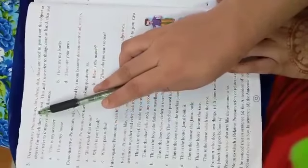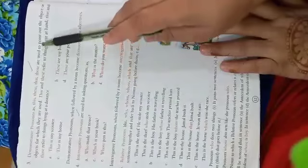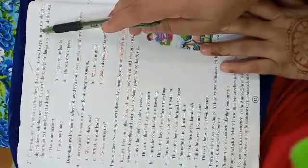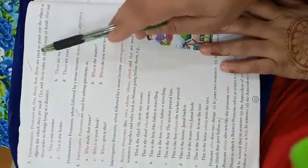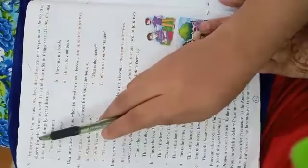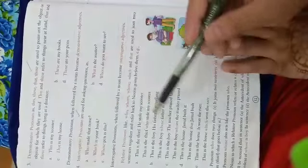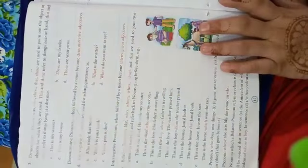Demonstrative pronouns such as this, these, that, those are used to point out or indicate the object or objects for which they are used. So these words are used to point out the object and objects for which they are used.